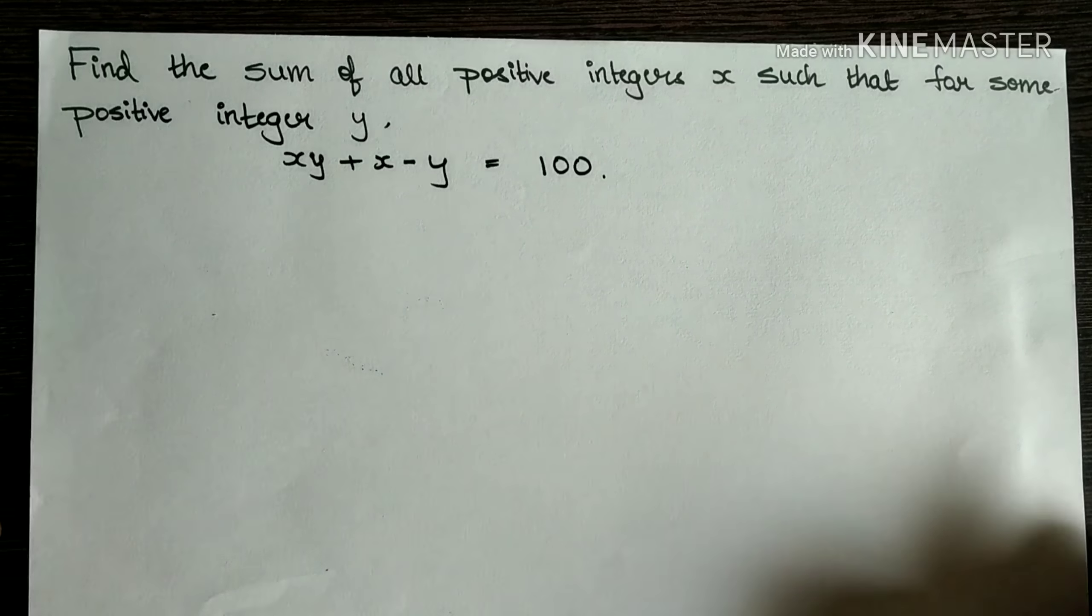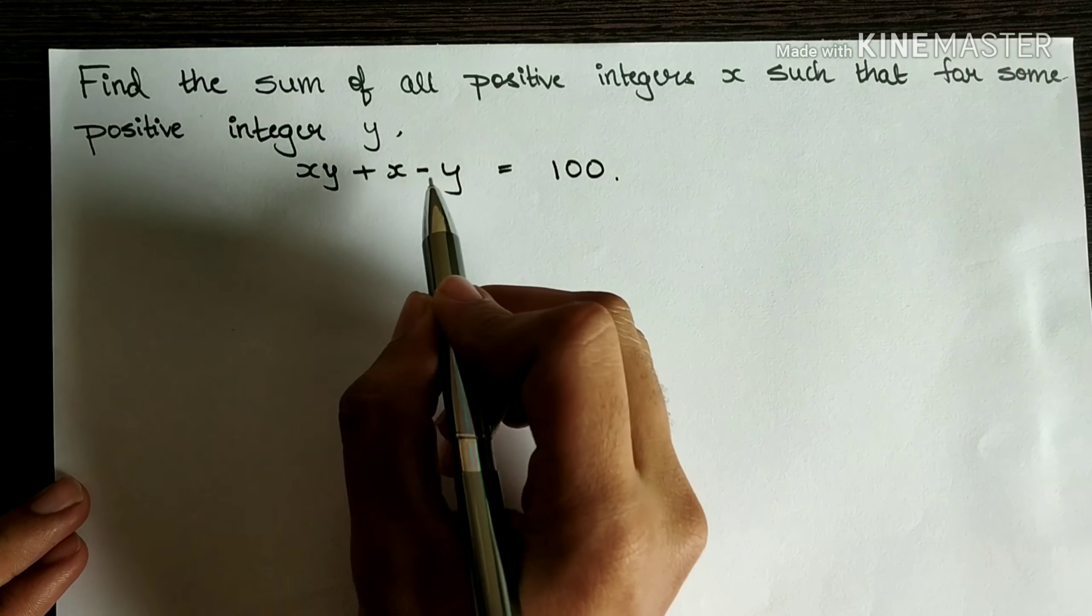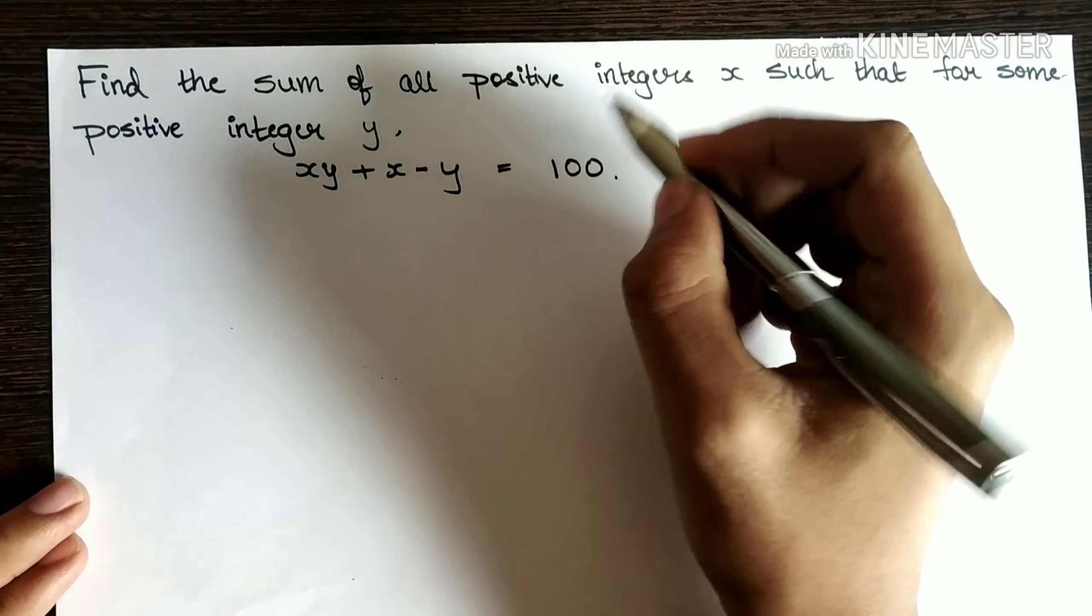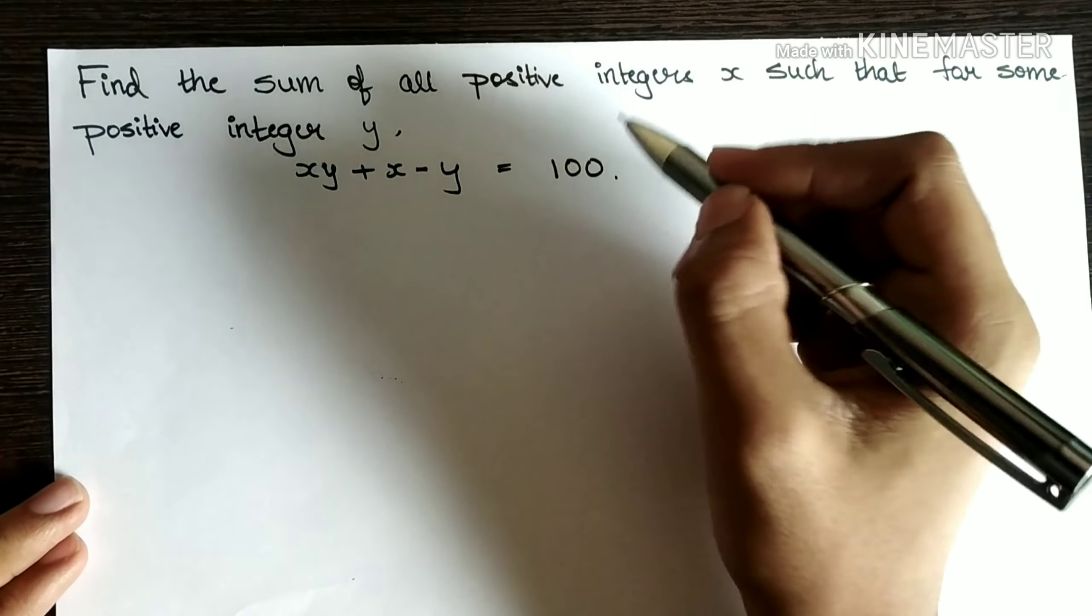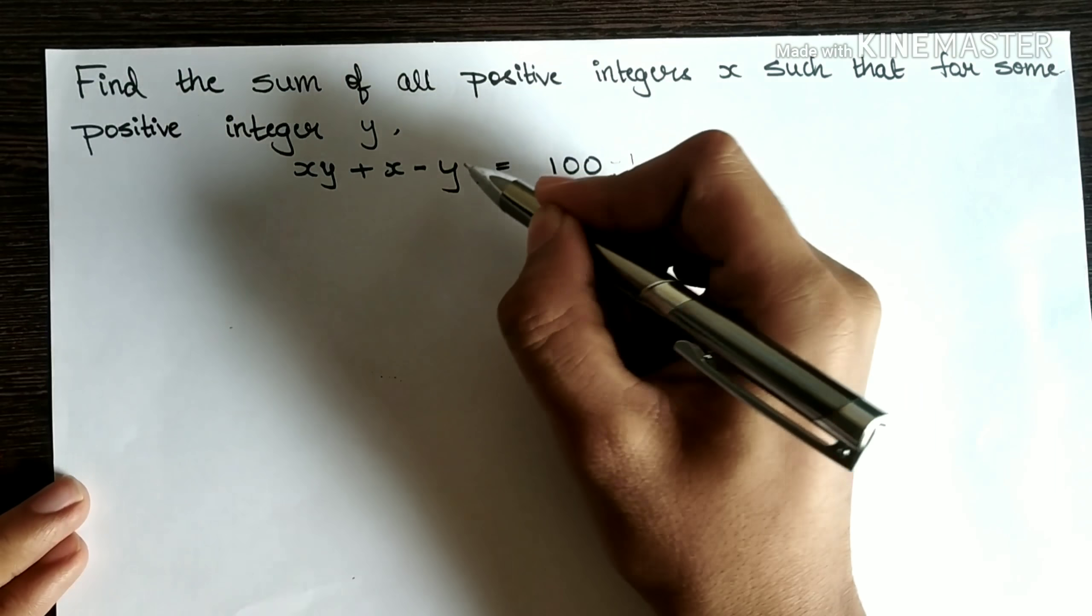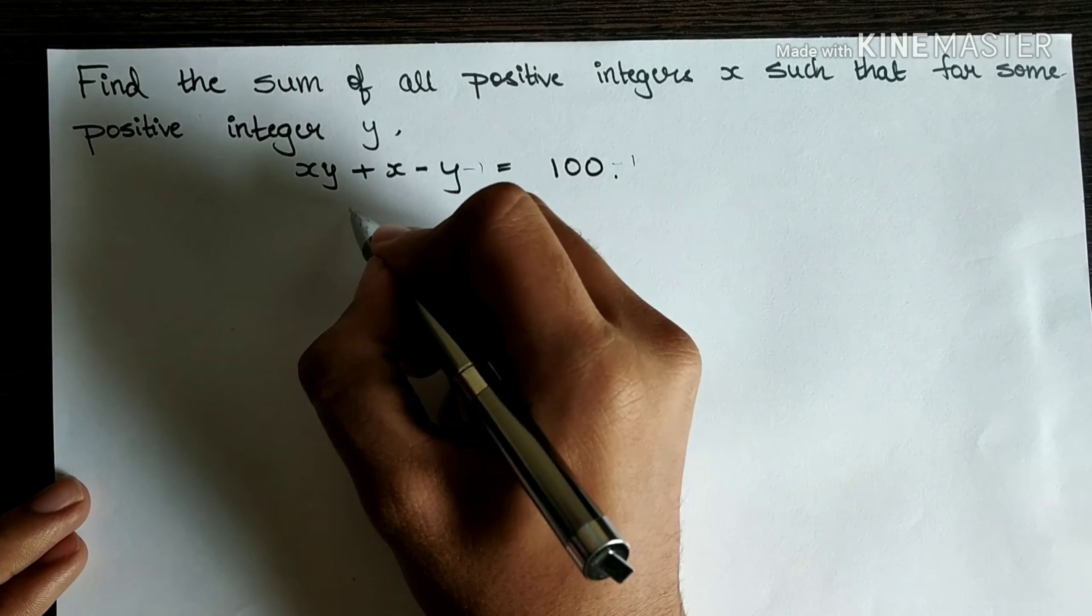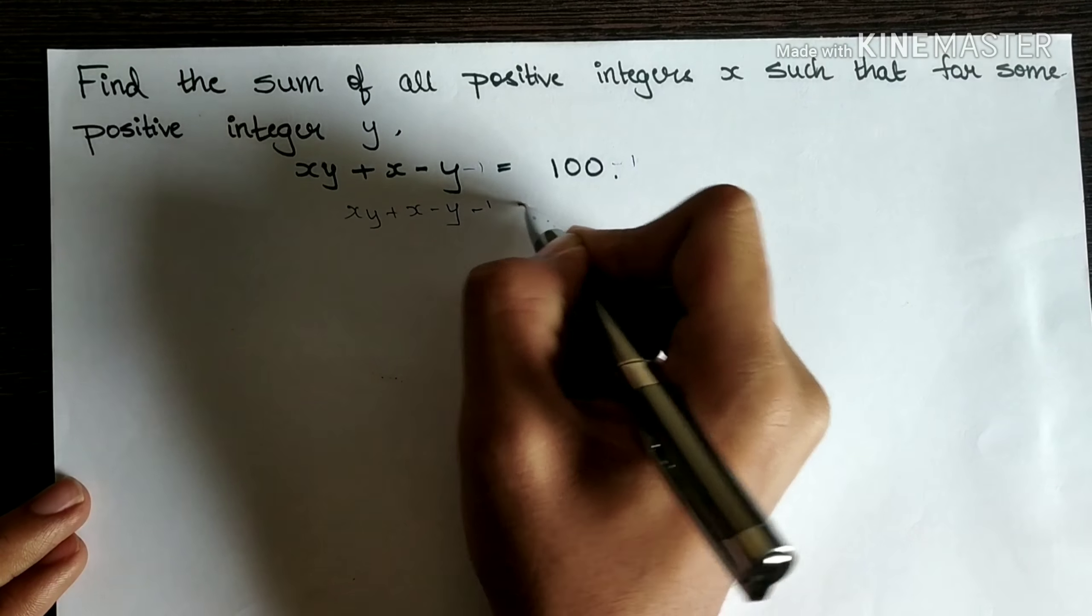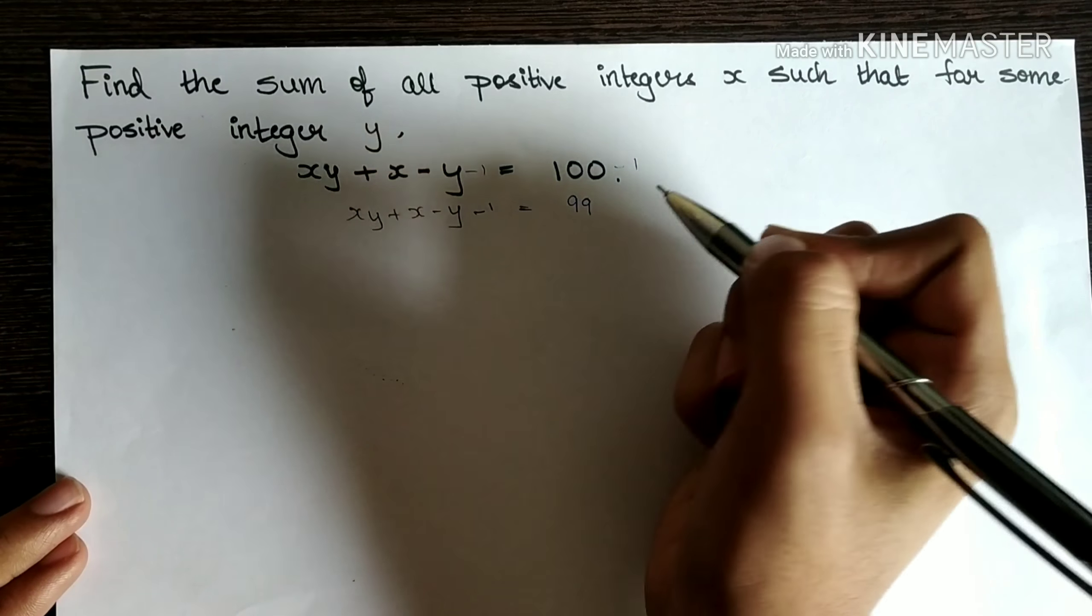Now what I do is, I will write the same equation in another form but I will subtract one on both sides or I will send one of them over here. So if I do minus 1 here, I need to do minus 1 here. I get xy plus x minus y minus 1 equal to 99.